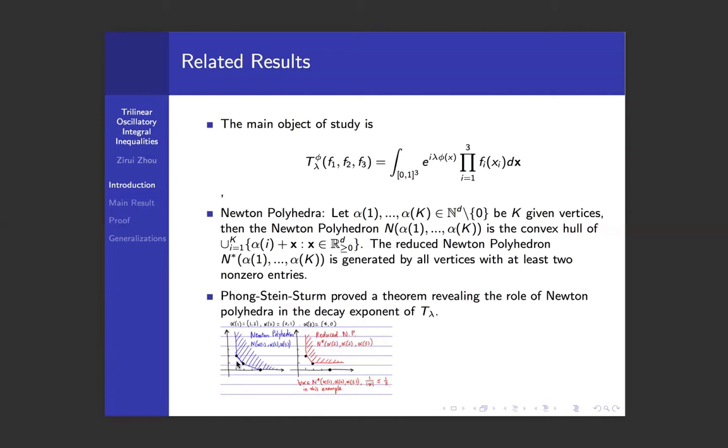Below is a picture with three given multi-indices in dimension 2. Here we are given (1,2), (2,1), and (4,0). The blue part is the Newton polyhedra generated by these. The red part is the reduced Newton polyhedra. The difference is that for the reduced Newton polyhedra, one would throw away the last multi-index because it only has one non-zero entry.